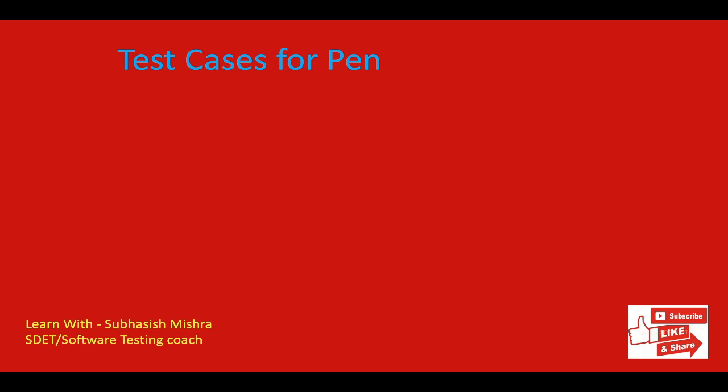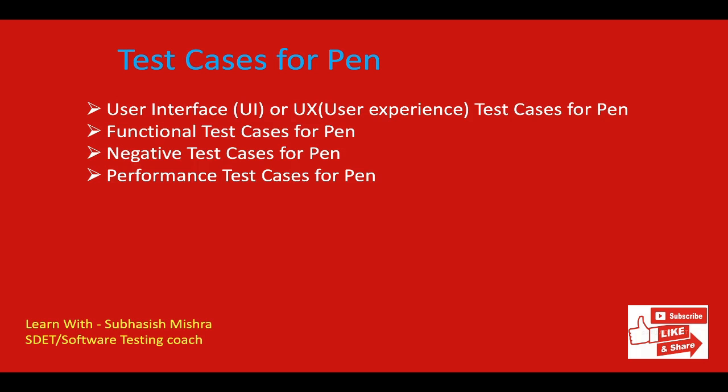One more thing you should remember: when any interviewer asks you this kind of question — like write test cases for a pen or pencil — always think about what are the different kinds of testing you can do for that product. Here, when I am saying product, it means the pen or pencil. So let's see what are the different types of testing we can do here.